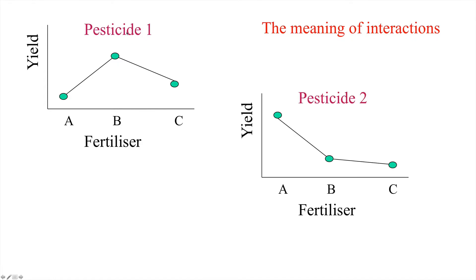So it might be for example that when we have pesticide 2 here B is no longer the highest yielding fertilizer and in fact it's A. So interactions occur when the effect of one predictor variable on that response is influenced by the levels of another predictor variable in the model. So it's something more sophisticated and conditional.